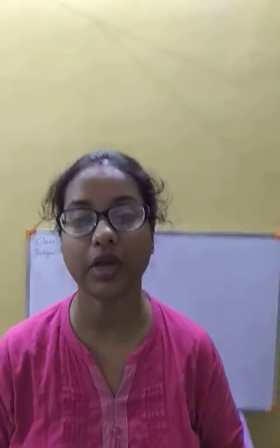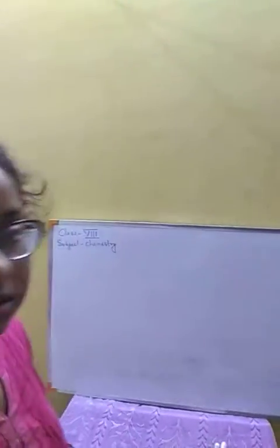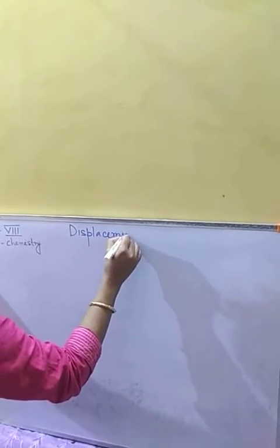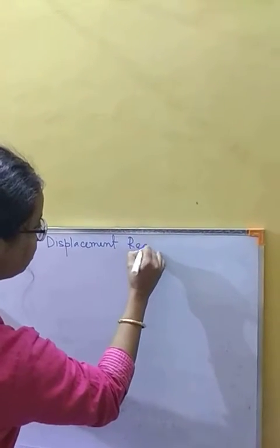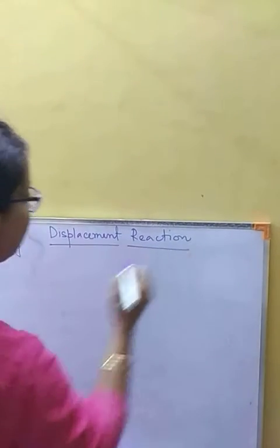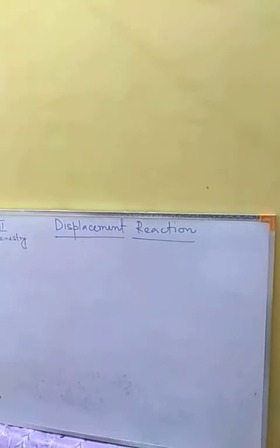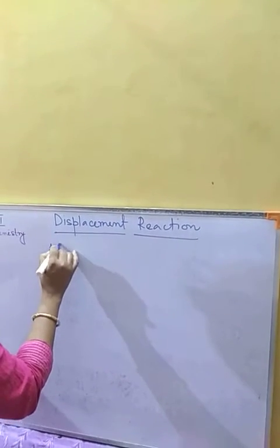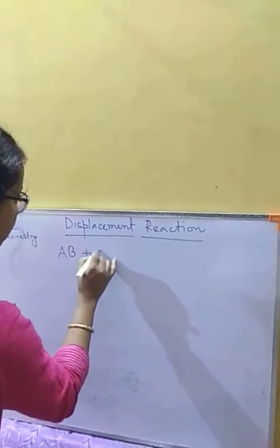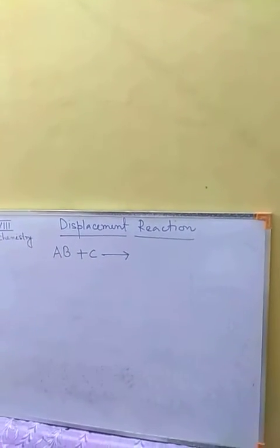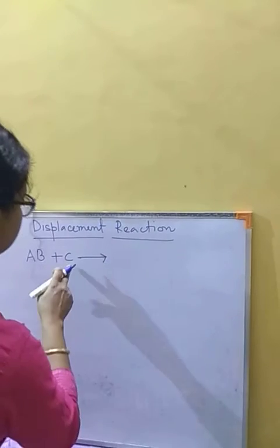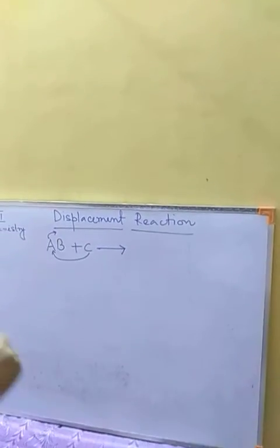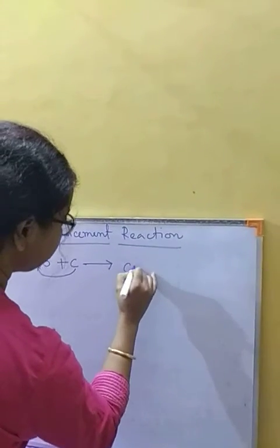Good afternoon children. Today we are going to discuss displacement reactions. From the name itself we can understand that one element will displace another. If AB is a substance reacting with C, then C will displace A and take its place, giving us CB plus A.